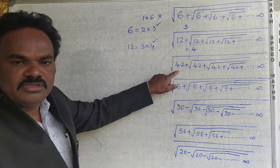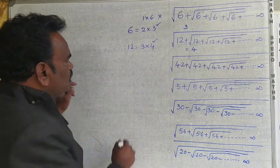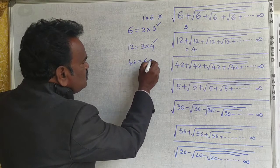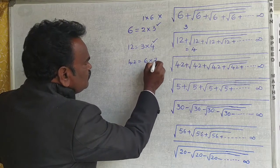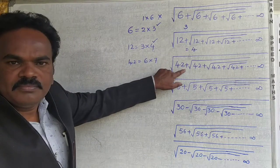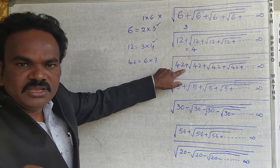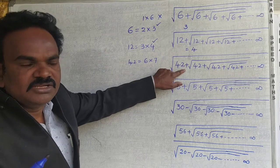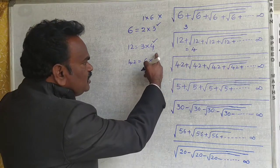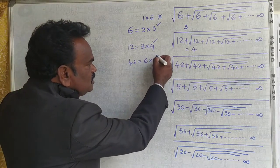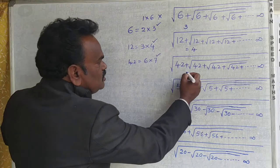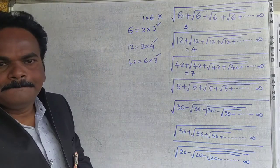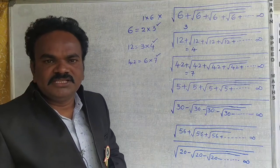This is the same approach. For 42, you can write 6 into 7. So your answer is the right answer — your answer is equal to 7.